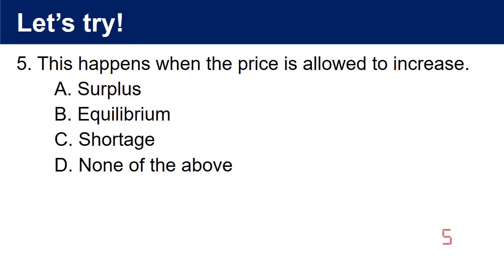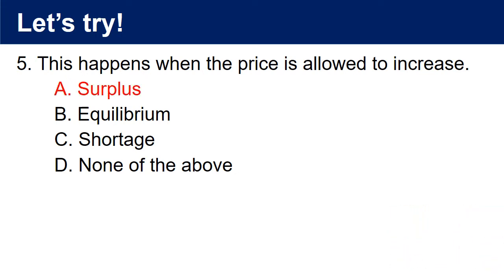Question 5: This happens when the price is allowed to increase. A. Surplus. B. Equilibrium. C. Shortage. D. None of the above. The answer is A — Surplus.